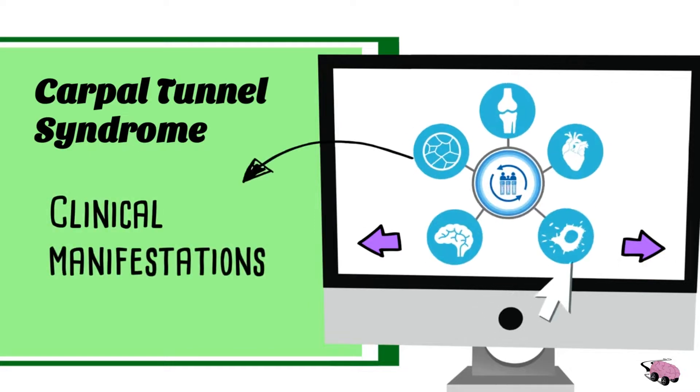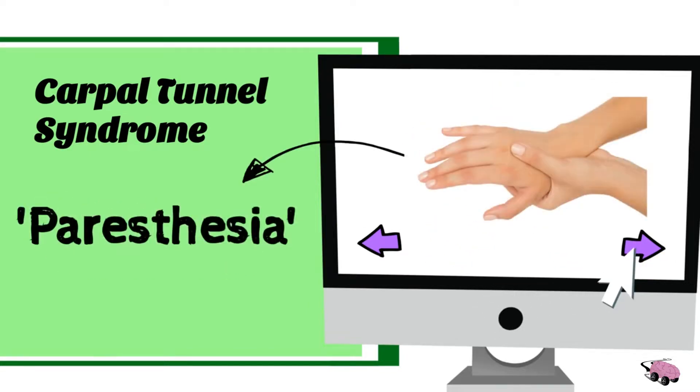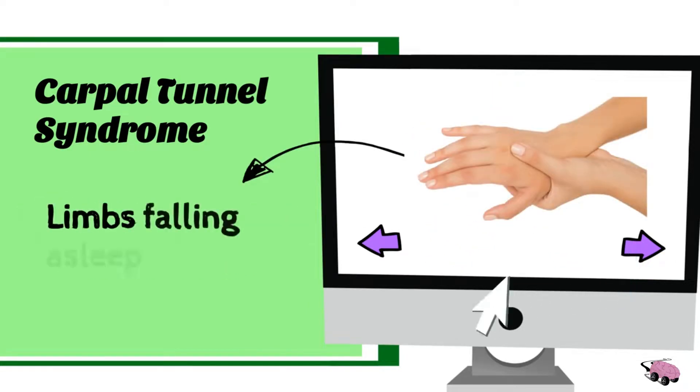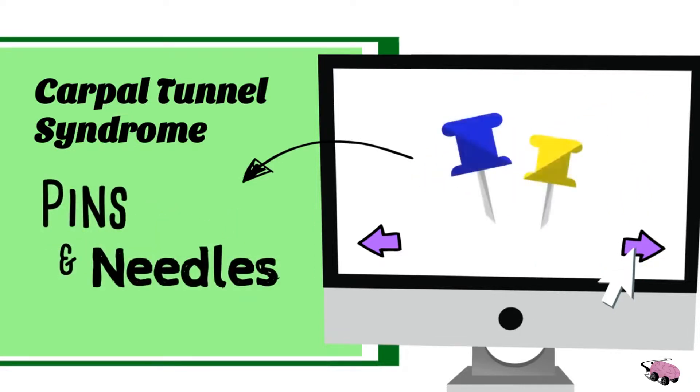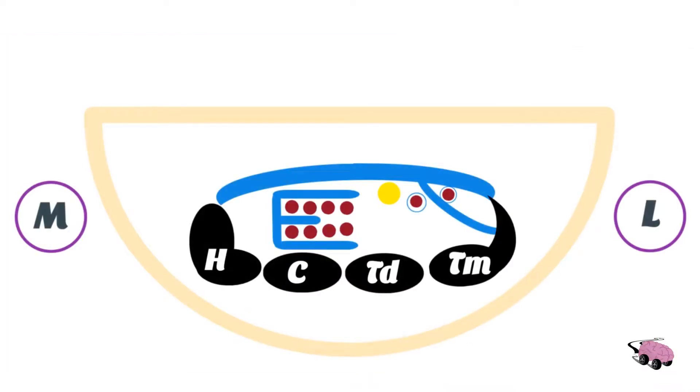The clinical manifestation of the carpal tunnel syndrome is paresthesia. In the layman term, it is referred to as limbs falling asleep and feelings of pins and needles. There you have it, the complete drawing of the carpal tunnel.